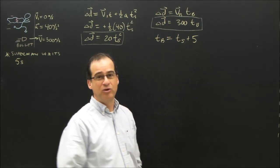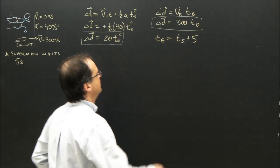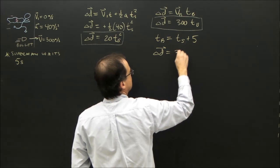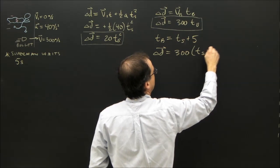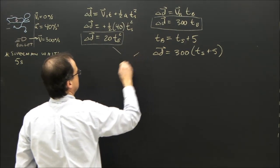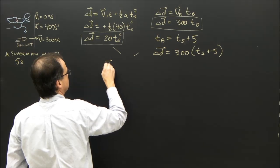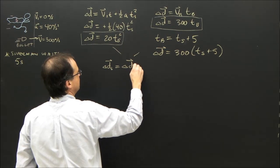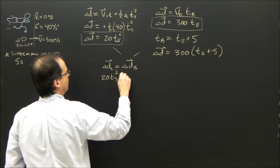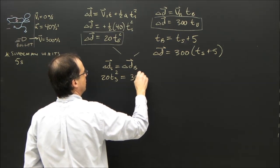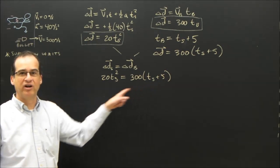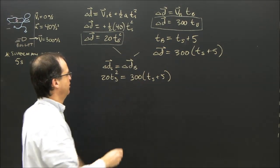Once you've got that, you're ready to go. So I'm going to plug this in there. The position of the bullet is 300 times Superman plus 5. So I'm going to relate these two together. The displacement of Superman is equal to the displacement of the bullet. So 20 times Superman squared equals 300 times T of Superman plus 5. I have now just one unknown.